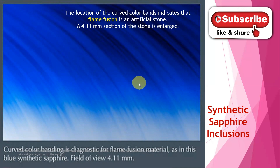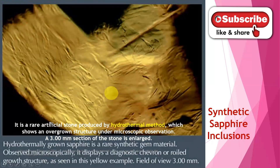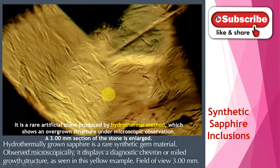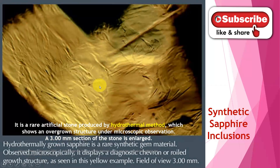Then this one is another method — the hydrothermal method, another method we use to produce stones inside labs. This stone is a 3 millimeter section enlarged. It is an artificial stone produced by the hydrothermal method which shows an overgrown structure. You can see the overgrown structure here under microscopic observation. When we see this, we can identify it is the hydrothermal method — synthetic sapphire.